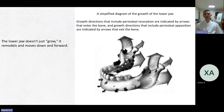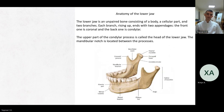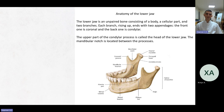It is not correct to say that the lower jaw just grows. The lower jaw doesn't just grow — it remodels and moves down and forward. The lower jaw is an unpaired bone consisting of a body, a cellular part, and two branches. Each branch rising up ends with two appendages: the front one is coronal and the back one is condylar. The upper part of the condylar process is called the head of the lower jaw.